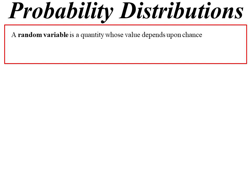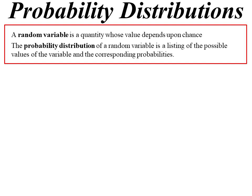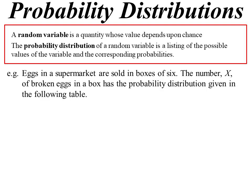Probability distributions: we define a random variable when doing statistics. Its quantity depends upon the chance of it happening. The probability distribution lists all possible values of that random variable and their probabilities. Let's use this as an example. Eggs in a supermarket are sold in boxes of six.